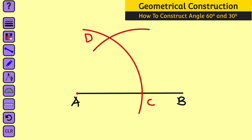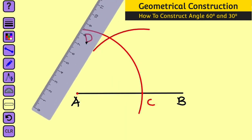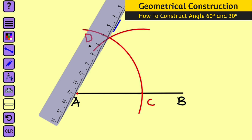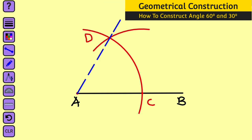Now bring your ruler and connect point D and point A together using broken lines — do not use solid lines, because we are not interested in angle 60 degrees but rather 30 degrees. This angle you're seeing here is angle 60 degrees, but we are interested in 30 degrees, which is why we use broken lines. Now let us bisect this angle.